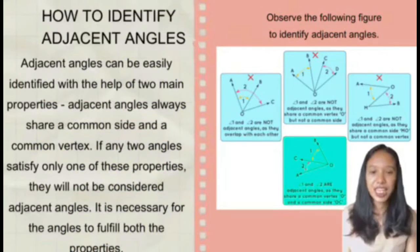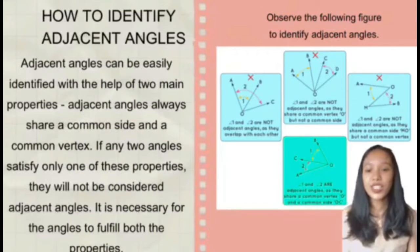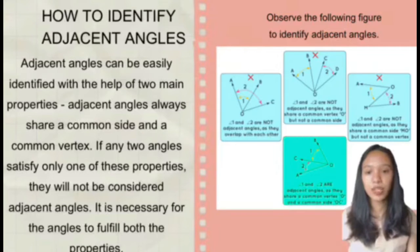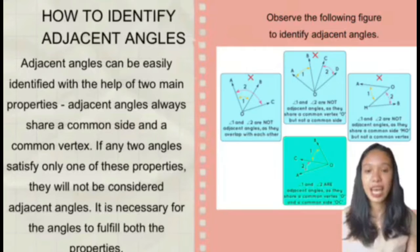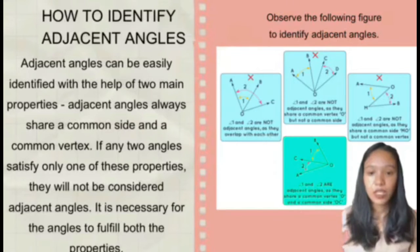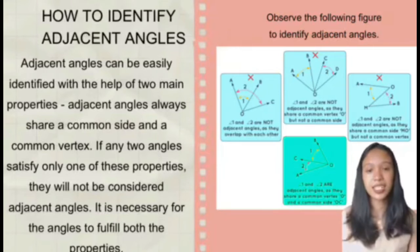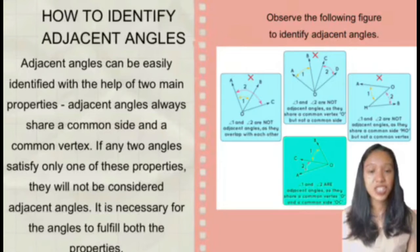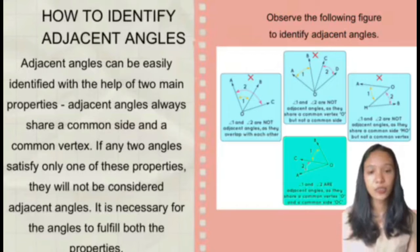How to identify adjacent angles. Adjacent angles can be easily identified with the help of two main properties: adjacent angles always have a common side and a common vertex. If any two angles satisfy only one of these properties, they will not be considered adjacent angles. It is necessary for the angles to fulfill both properties.